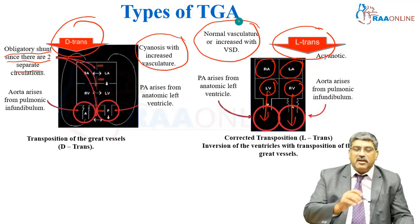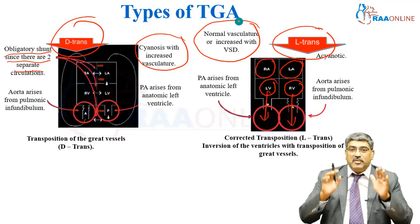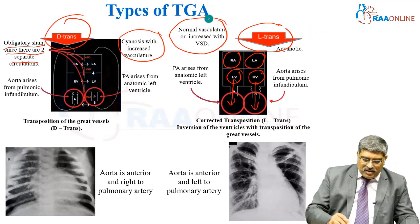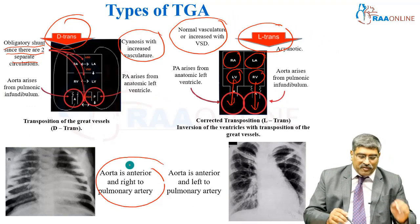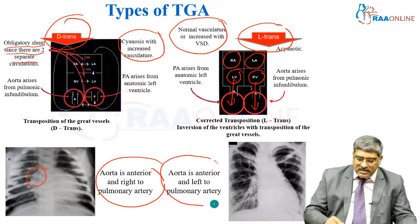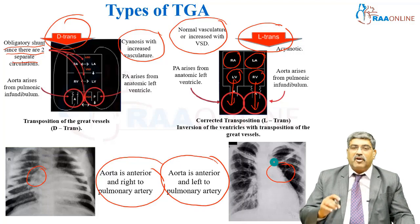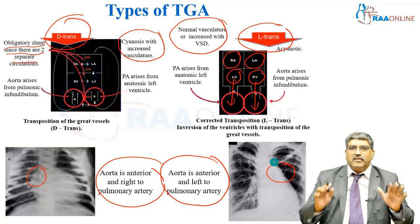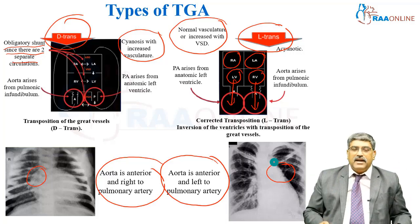Here, the vasculature may be normal or increased with large VSD. In D-TGA, the aorta is anterior and to the right of the pulmonary artery. In L-TGA, the aorta is anterior and to the left of the pulmonary artery. You have to understand the arrangements in D-TGA and L-TGA.